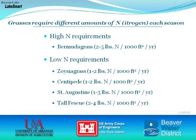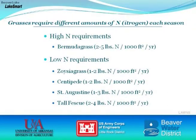All different lawn species require different amounts of nitrogen fertilization. Bermudagrass is considered a high nitrogen requirement grass because it grows very aggressively. The other major turfgrass species — zoysiagrass, centipede grass, St. Augustine grass, and tall fescue — are grouped as lower nitrogen requiring grasses. Zoysiagrass and bermudagrass can be used anywhere in the state; centipede and St. Augustine are better for southern Arkansas; tall fescue is mainly for the northern half of Arkansas.